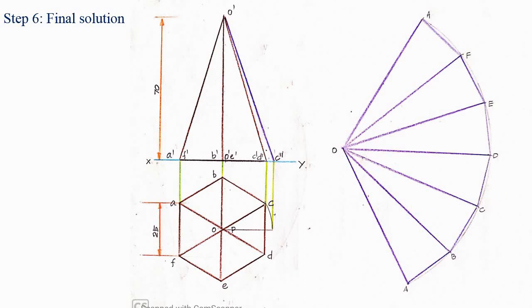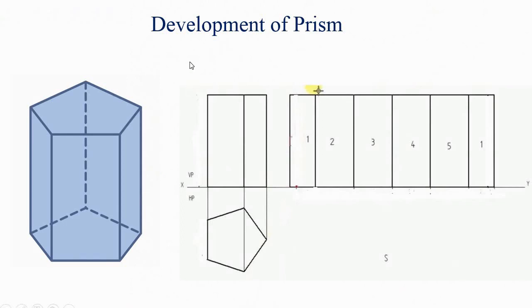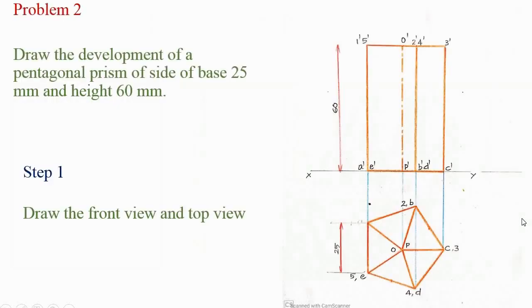So this is the final solution for the pyramid development. Now let's discuss the development of a prism. A prism consists of two bases. Here we are considering a pentagonal prism, so we have base 1, base 2, and the lateral surfaces. When you draw the development of a pentagonal prism, this will be its development. We will check how to obtain it by solving a problem.